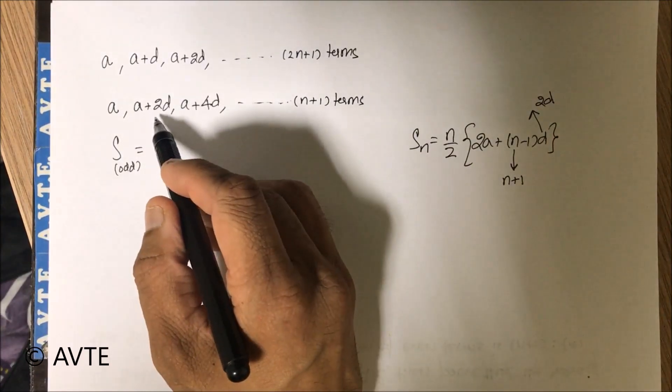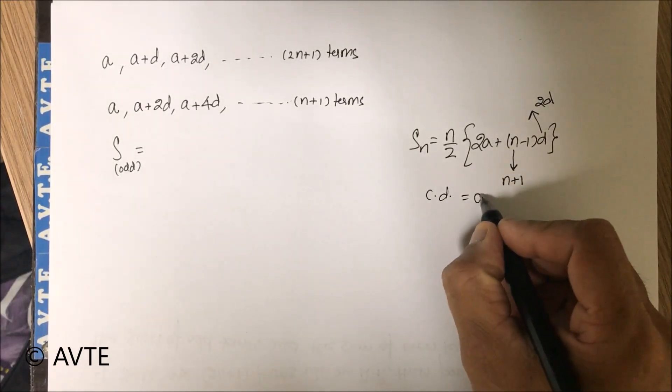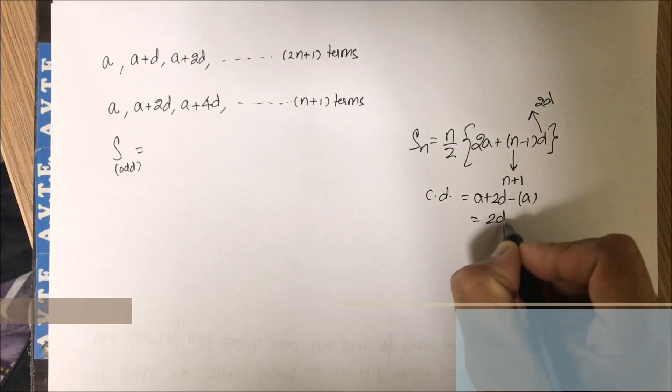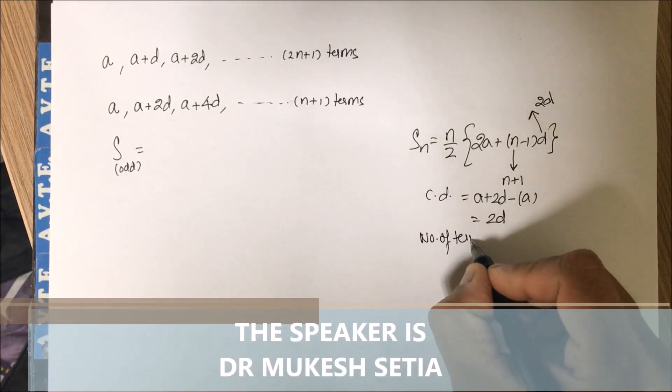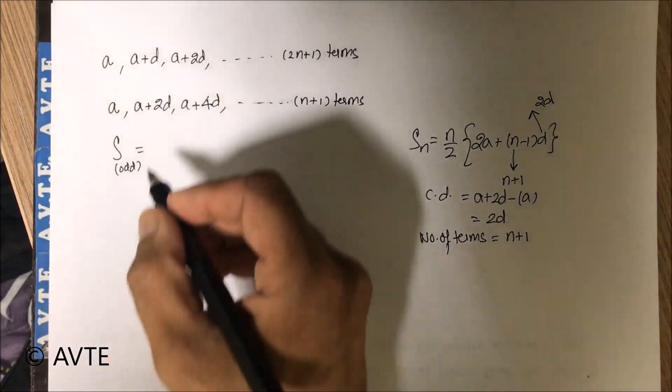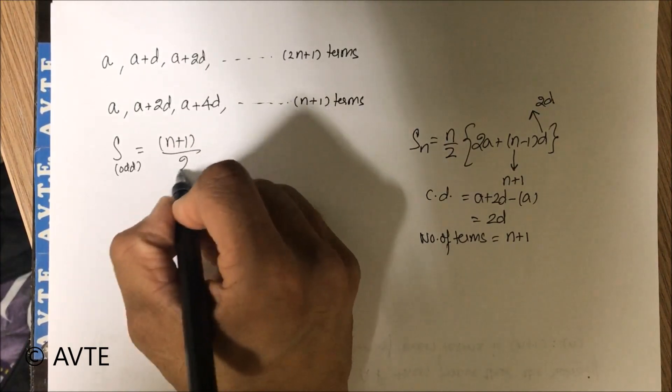Just see, the common difference is second term minus the first term. So the common difference here is 2d, and number of terms here is not n, it is n plus 1. So using that we apply the formula.